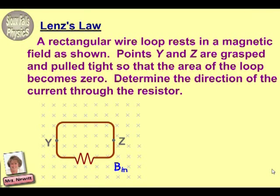Hey everyone, here's your Sioux Falls physics teacher. Today looking at the idea of Lenz's Law. We have a rectangular wire loop in a magnetic field, and points Y and Z are pulled tight so that the area of the loop becomes zero. Determine the direction of the current through the resistor.